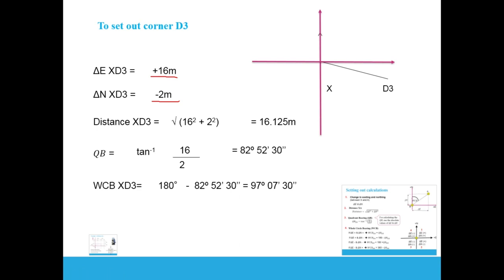Data required to set out D3: distance = 16.125 meters, whole circle bearing = 97°07'30" — an angle from north clockwise towards the line XD3.